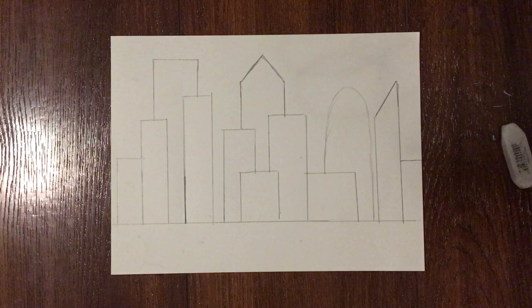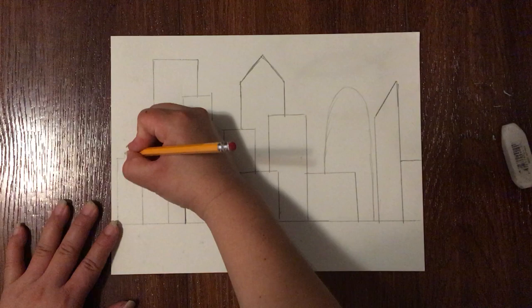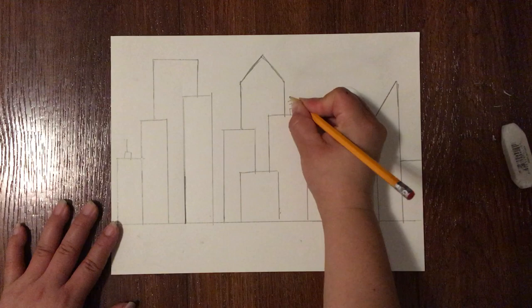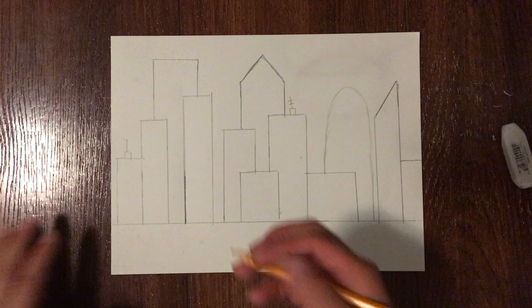Now we're going to do some details. This can be things on top of the building - sometimes buildings have, I don't really know what they're called, but they have these antennas or something - and then you can add the windows. These are details.